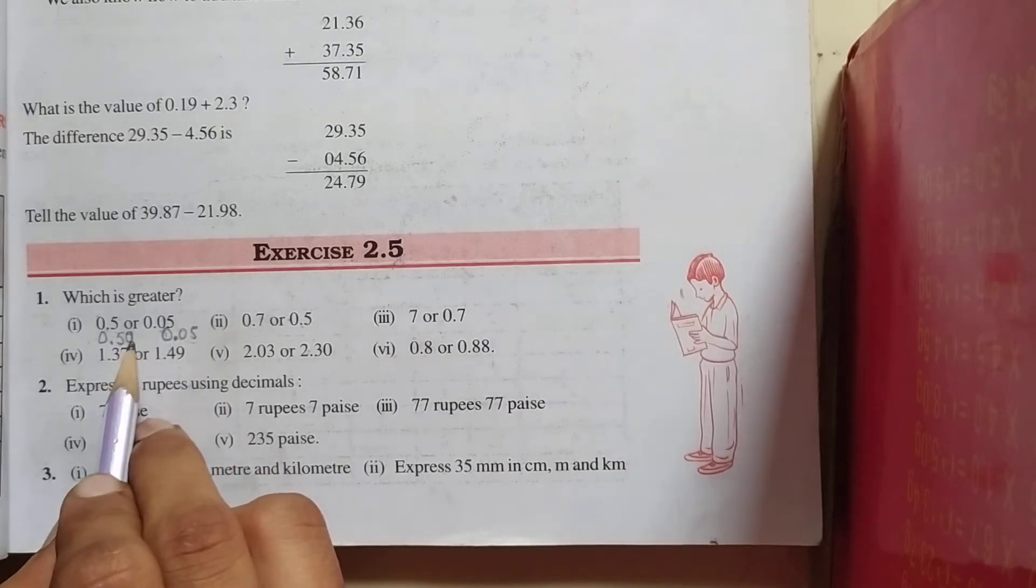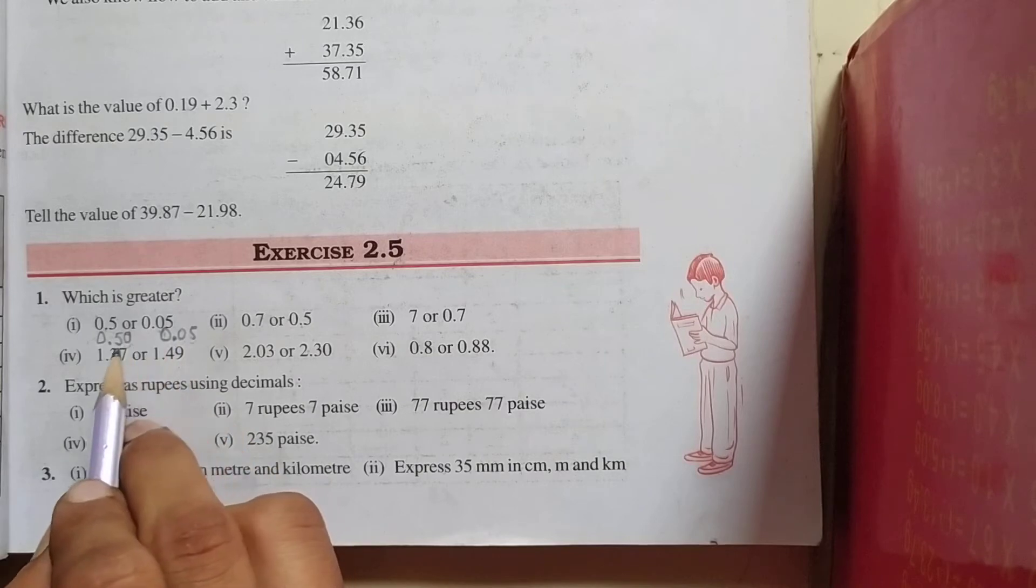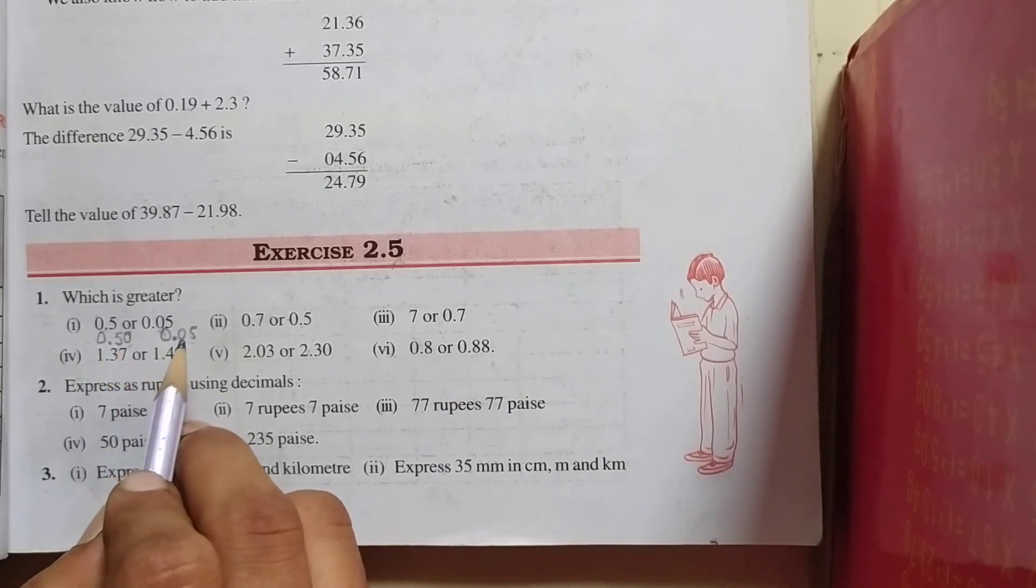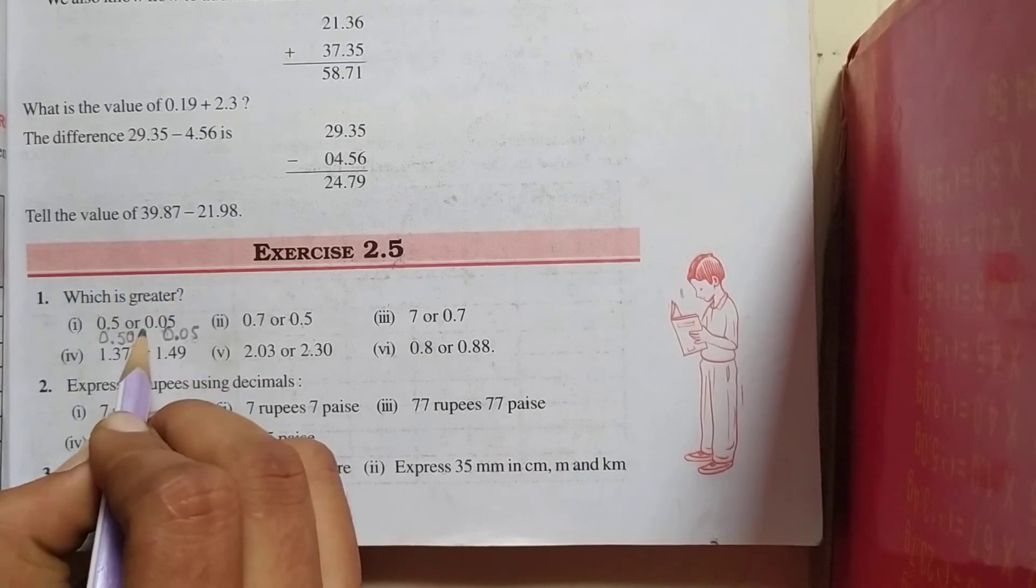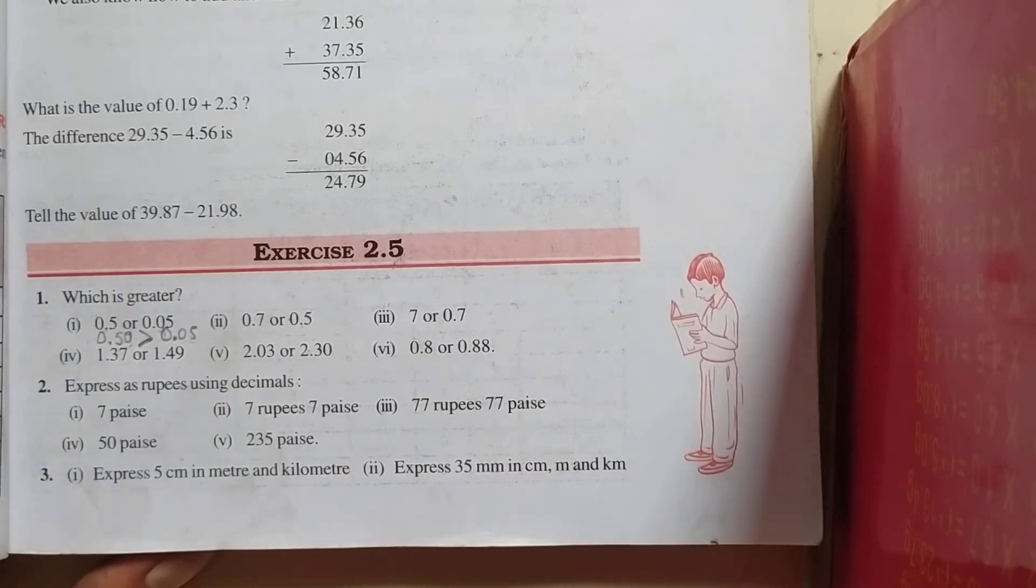Here is 50, and here is 05. So, of course, 0.50 is greater than 0.05. So, which one is greater? 0.5. Okay students, in this way you have to solve.